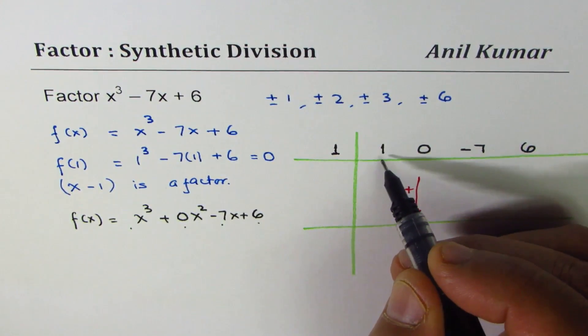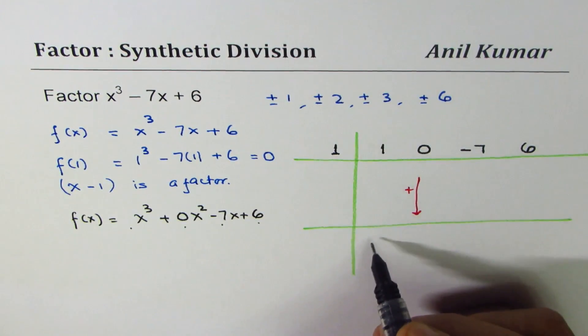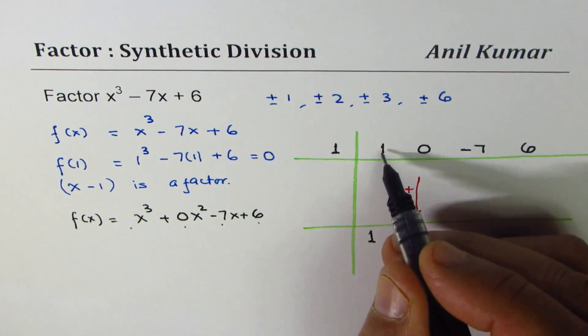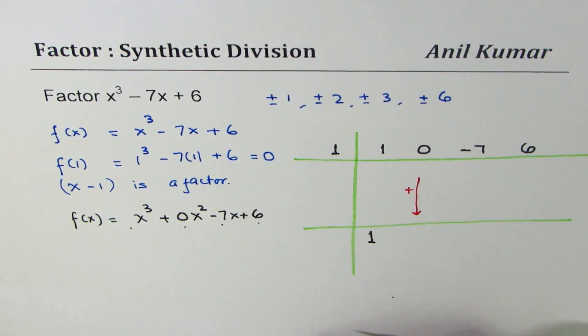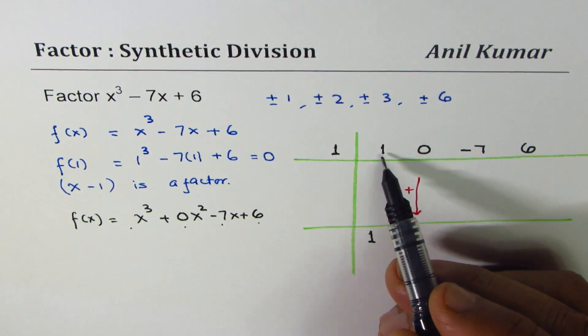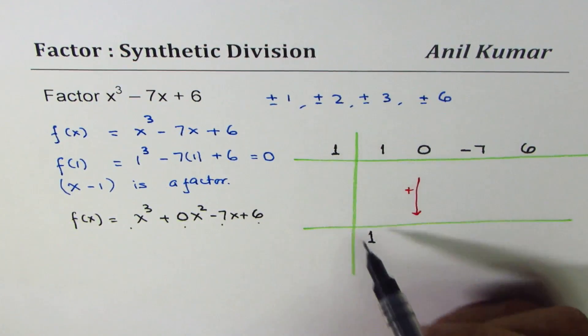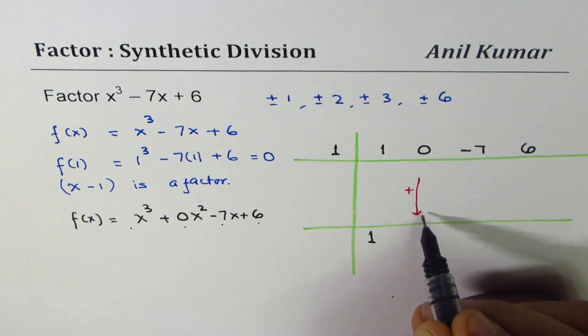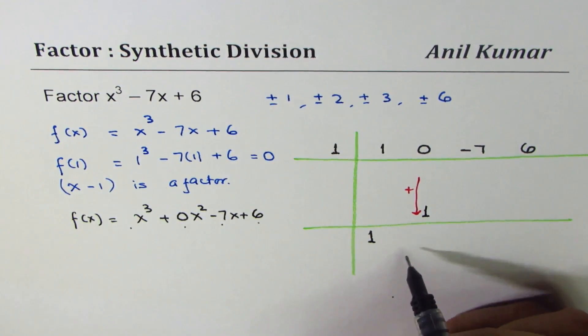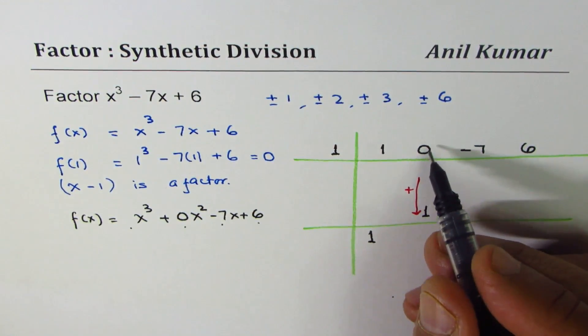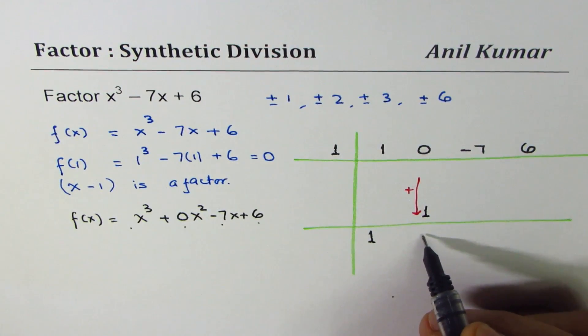To begin with, we always start with the leading coefficient. It is brought under the line or carried forward. In our case, the leading coefficient is 1. We'll multiply 1 by 1. Write the number in the second position. Add 0 and 1, we get 1.